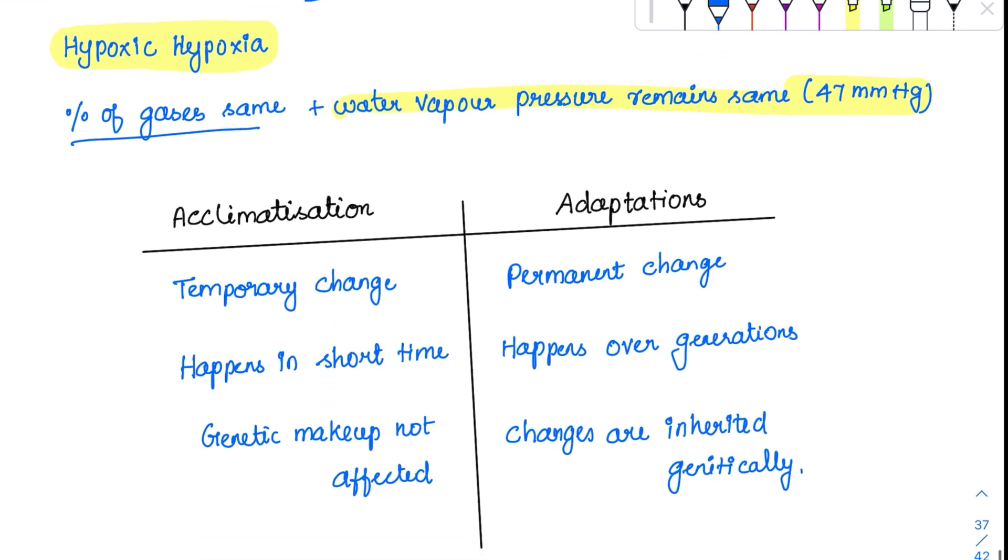At high altitude, two things happen: acclimatization and adaptation. Acclimatization can happen in any of us who aren't mountain dwellers. If you're a low lander going to high altitude, acclimatization usually happens. But if people stay there for generations, adaptation occurs.